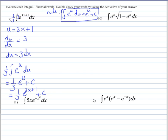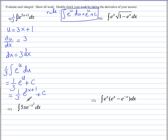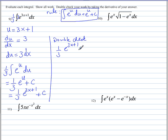We should always take the derivative of our answer to make sure it is in fact the original integrand. The derivative of e to the u is e to the u times u prime. The one third stays on the outside, so it's going to be one third times e to the 3x plus 1 times the derivative of 3x plus 1, which is 3. The derivative of a constant is 0. The 3 and the one third cancel, and we do in fact get e to the 3x plus 1. You should be able to do this part in your head quickly.